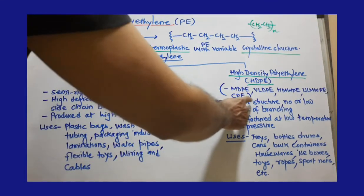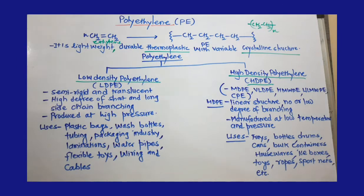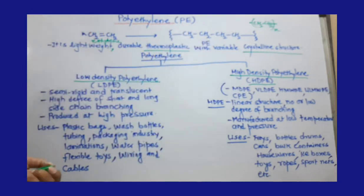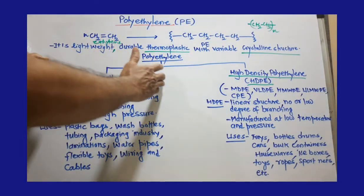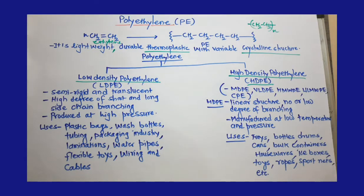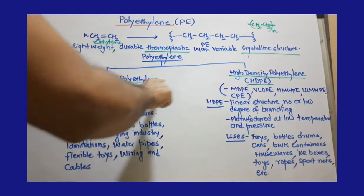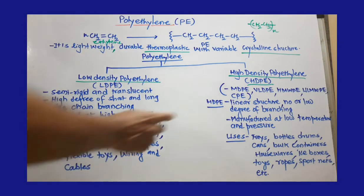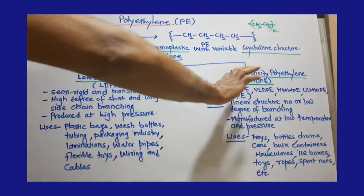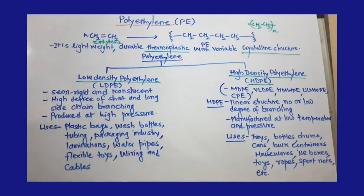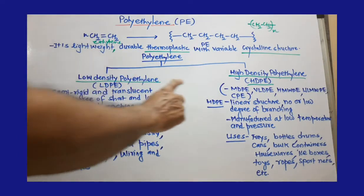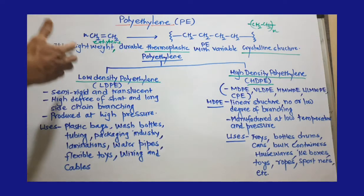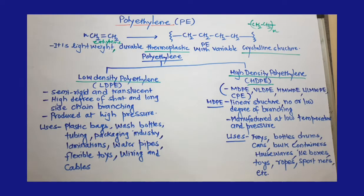There is also ULMWPE, which means ultra low molecular weight polyethylene, and CPE, which is chlorinated polyethylene. These are a few classes of polyethylene, but LDPE and HDPE are the most popular. The other classes are less frequently used, but you should know their names.